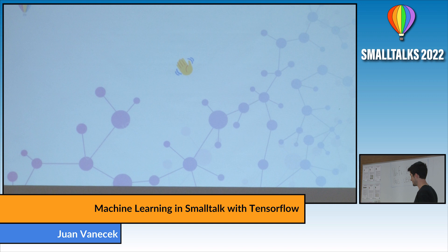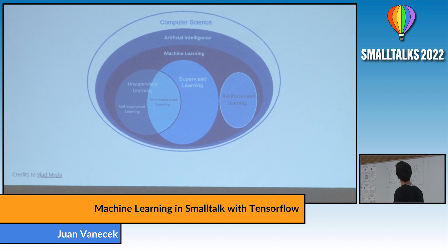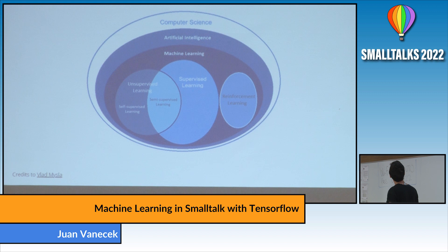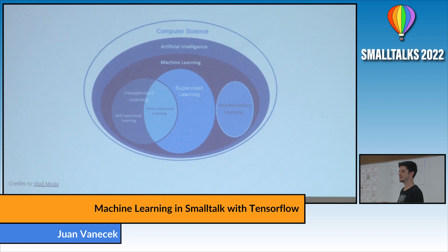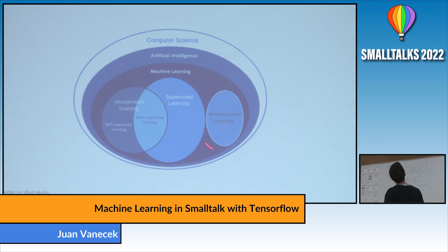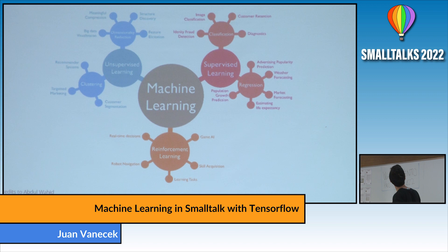I hope it brings some light on the subject. So, some concepts: artificial intelligence is any technique that mimics human intelligence in computers. Machine learning uses complex statistical techniques that train or improve machines at tasks with experience. There are three big groups: reinforcement learning, supervised learning, and unsupervised learning.